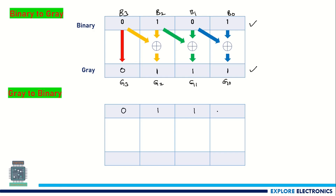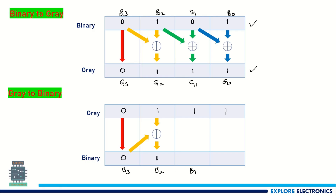Starting with MSB, B3 = G3 = 0. To get B2, XOR B3 with G2: 0 XOR 1 = 1, so B2 = 1. To get B1, XOR B2 and G1: 1 XOR 1 = 0, so B1 = 0. To get B0, XOR B1 and G0: 0 XOR 1 = 1, so B0 = 1.